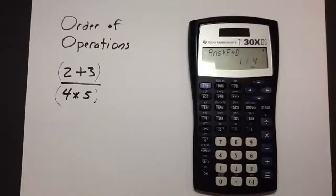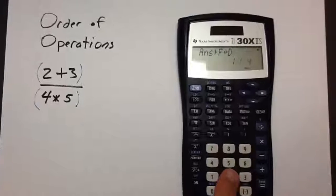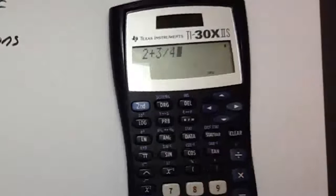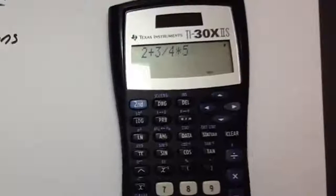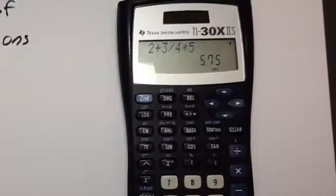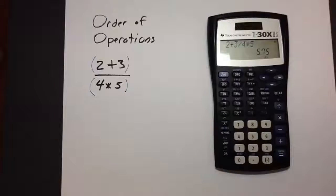Now let's say you forgot the parentheses. Let's say you said 2 plus 3 divide 4 times 5. You would get something completely different. 5.75 is not the correct answer, so it is critical to include the parentheses.